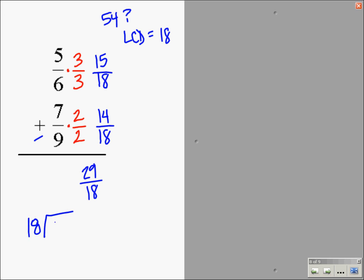18 is going to go into 29 one time. We're going to do some long division and subtract, and I'll get 11 remaining. So 29/18 will become 1 and 11/18. That will be our final answer for adding these two fractions.